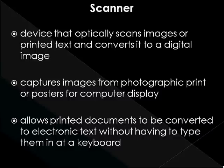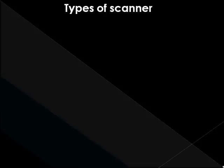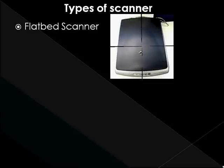Most scanners today are variations of the desktop or flatbed scanner, that allows documents to be placed on a flat scanning surface. There are several types of scanner. The flatbed scanner has a glass window where the item to be scanned is placed on top of, while the scanning head moves past the item. This method is similar to a Xerox machine.